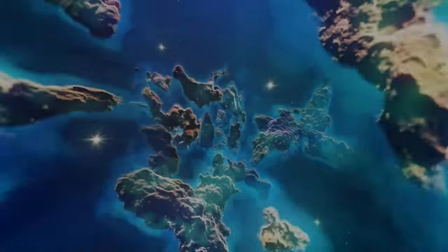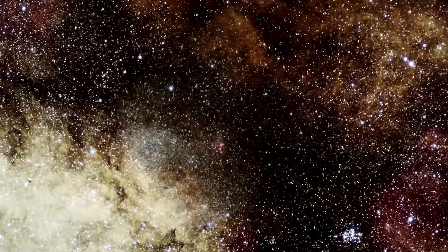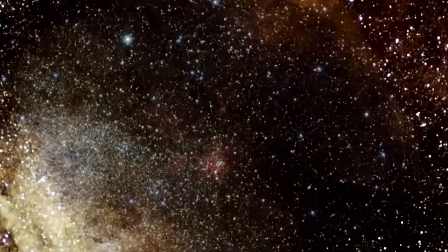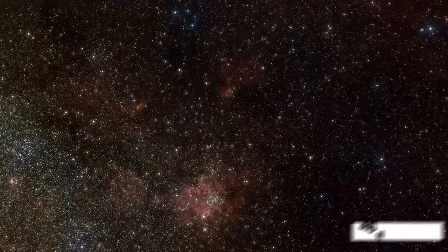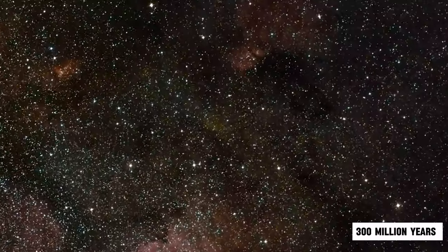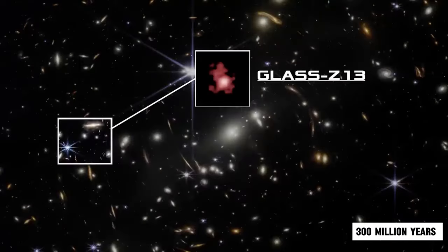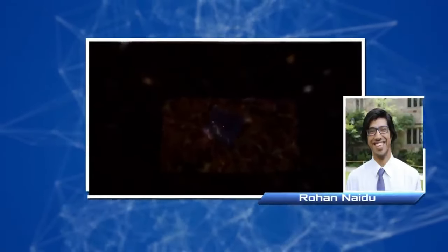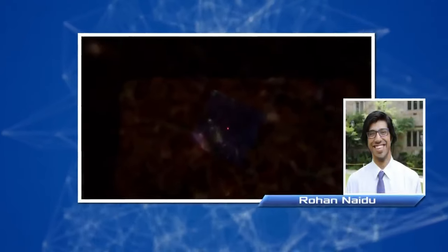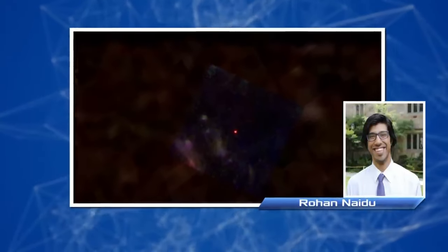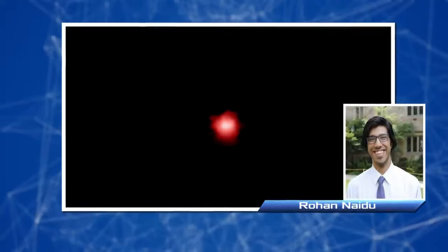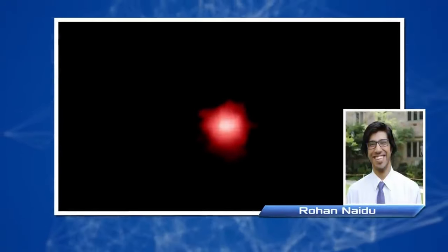The most distant galaxy ever. Just a week after its first image was shown to the world, the James Webb Space Telescope may have discovered a galaxy that existed 13.5 billion years ago. The galaxy, known as Glass Z13, dates back 300 million years after the Big Bang, about 100 million years earlier than anything previously identified, said scientist Rohan Naidoo of the Harvard Center for Astrophysics. We are potentially looking at the most distant starlight anyone has ever seen, he said.